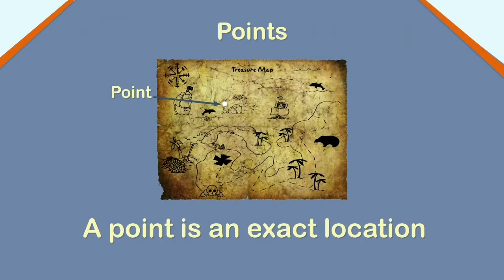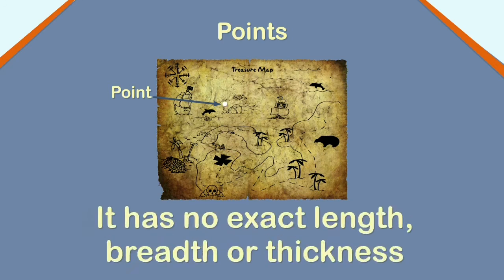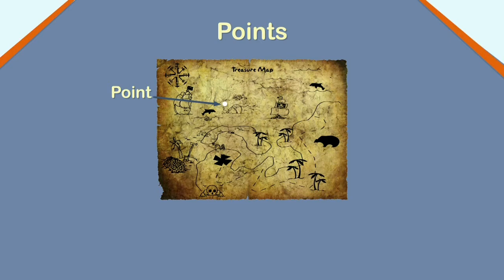A point is an exact location in geometry. A point is shown as a dot. A point has no exact length, breadth, or thickness. It has no size or shape. It is generally used to locate an exact position.